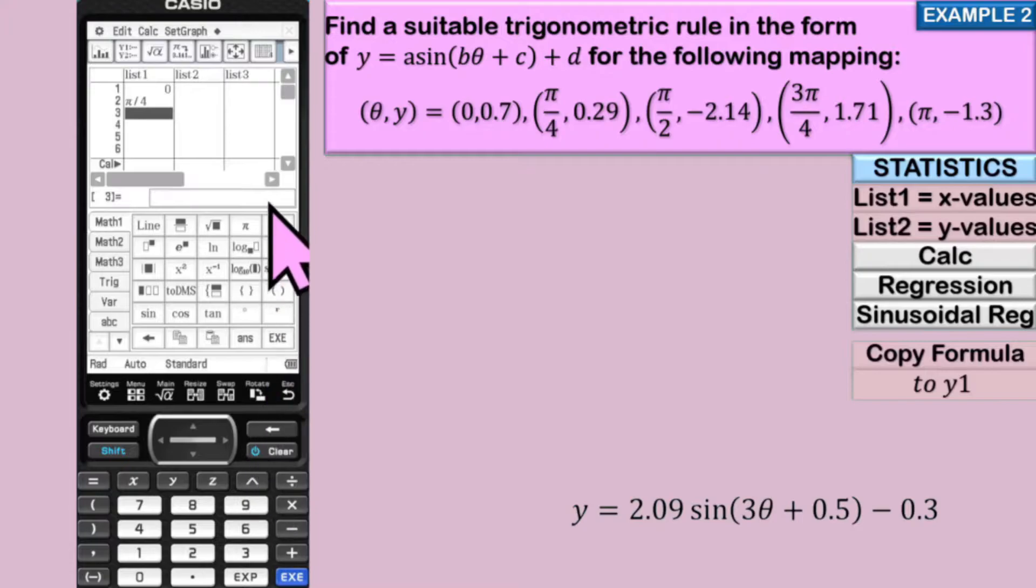Then we have pi on two, pi over two. And then three pi on four, three pi on four. And lastly, our last x value is pi. Enter. Don't forget to click enter.